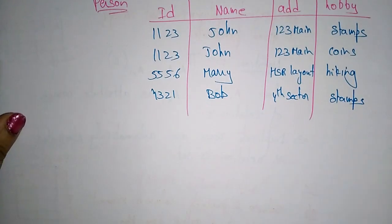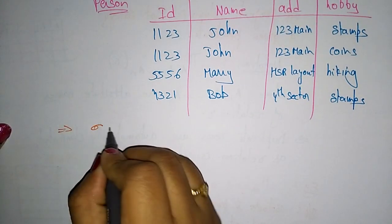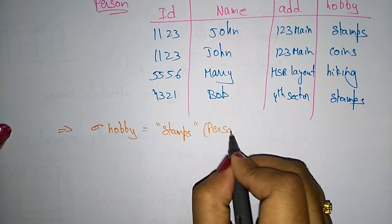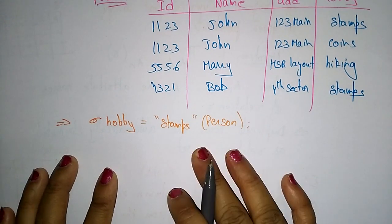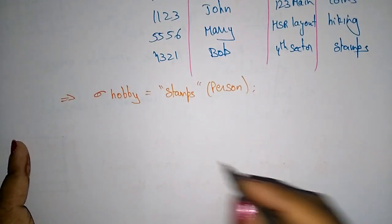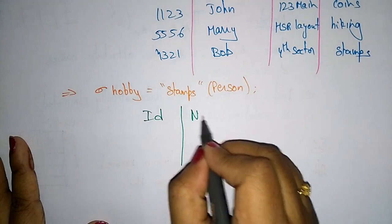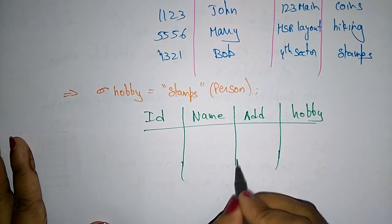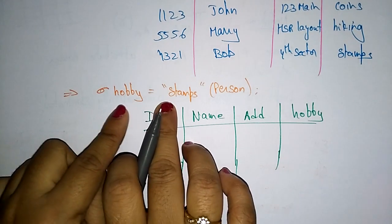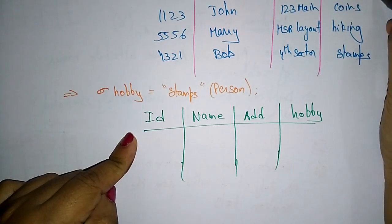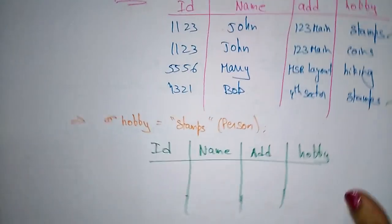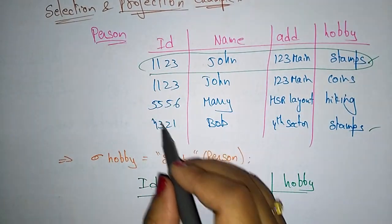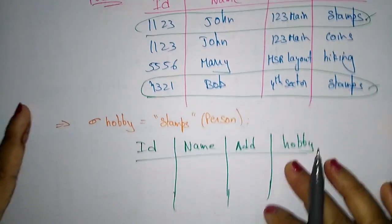Now let us write the query. The first query uses selection: sigma hobby = 'stamps' from person. Whenever I execute this query, sigma is used to select the rows — select the rows where hobby is equal to stamp collection from the table person. I want only the tuples which satisfy the predicate, that is stamps. Only those two rows will be selected.